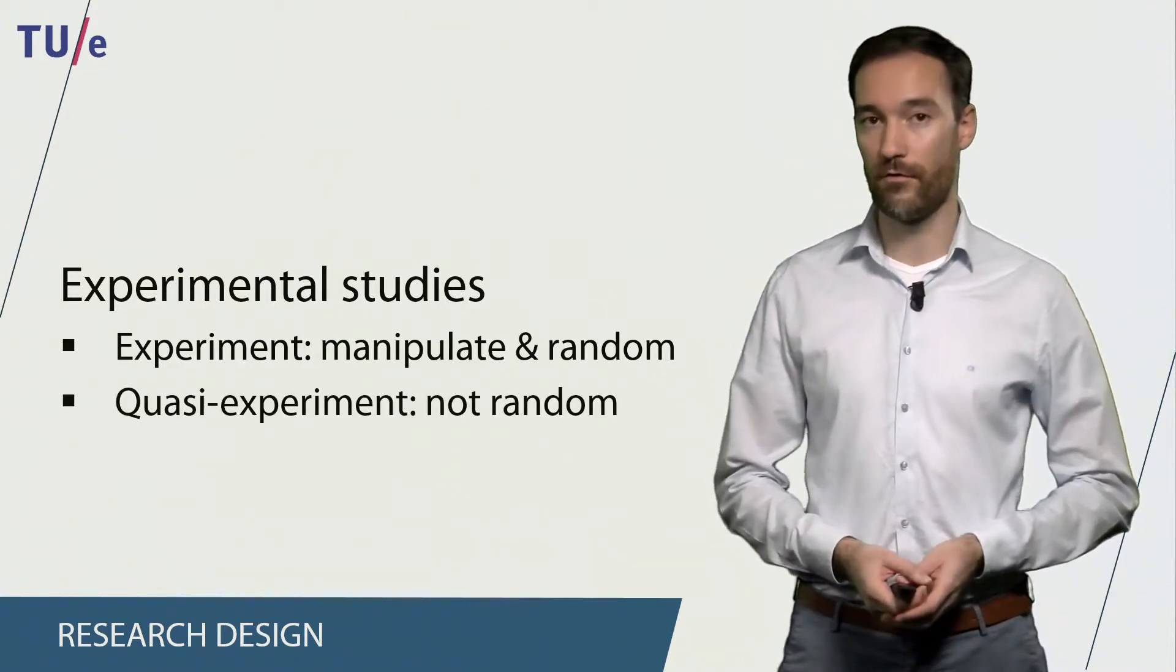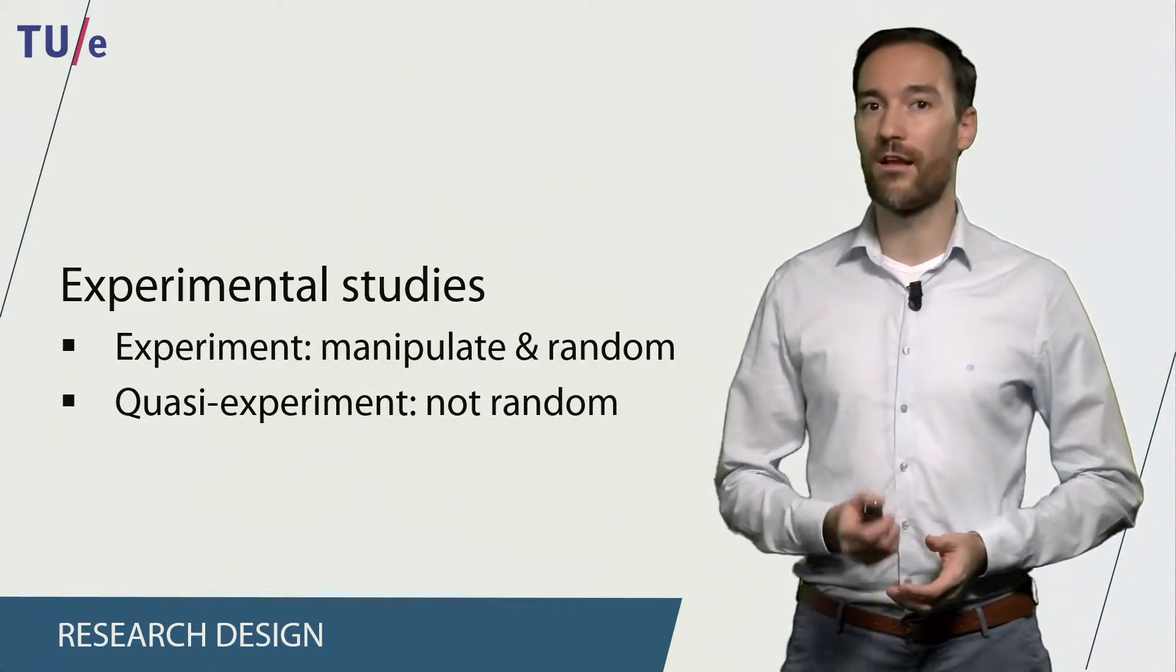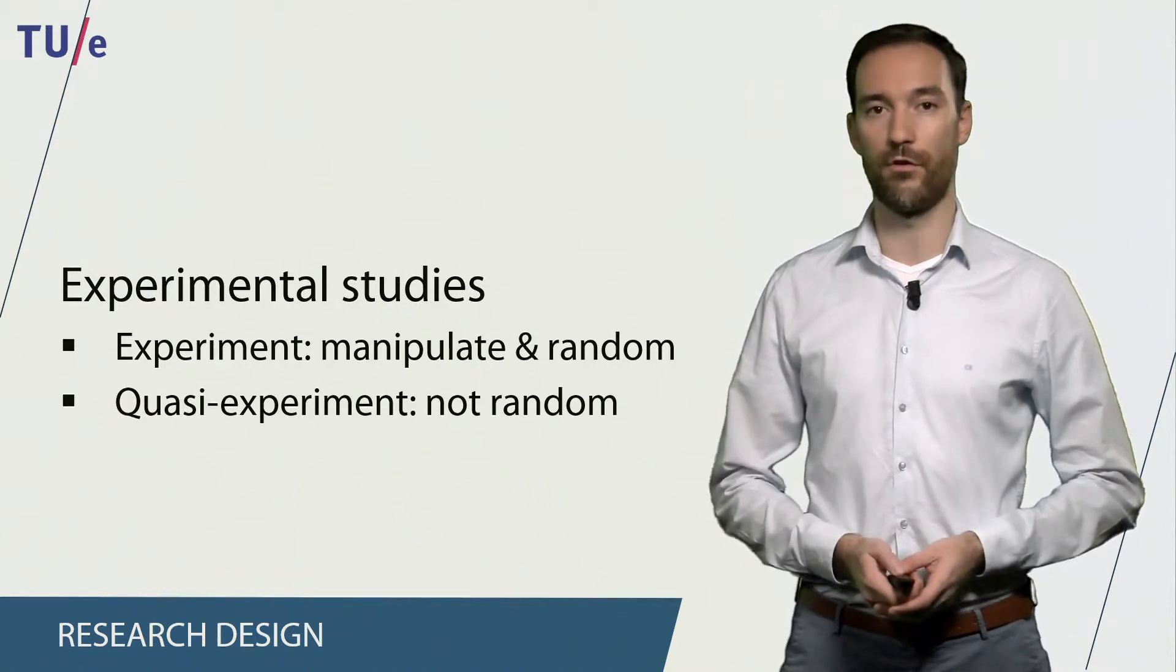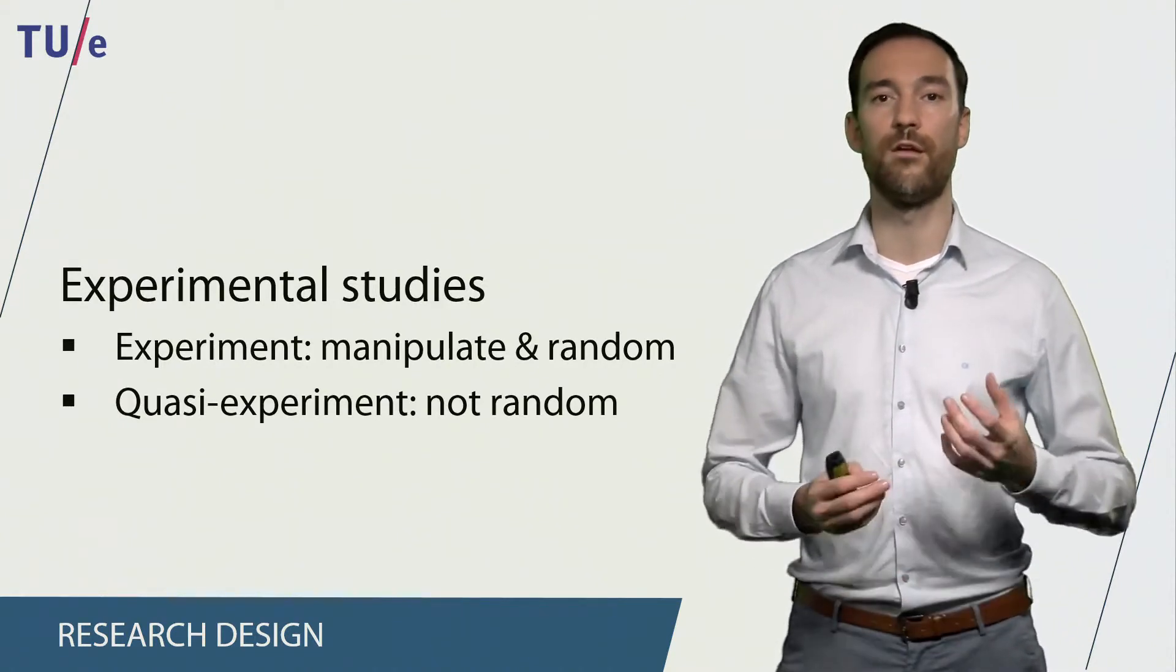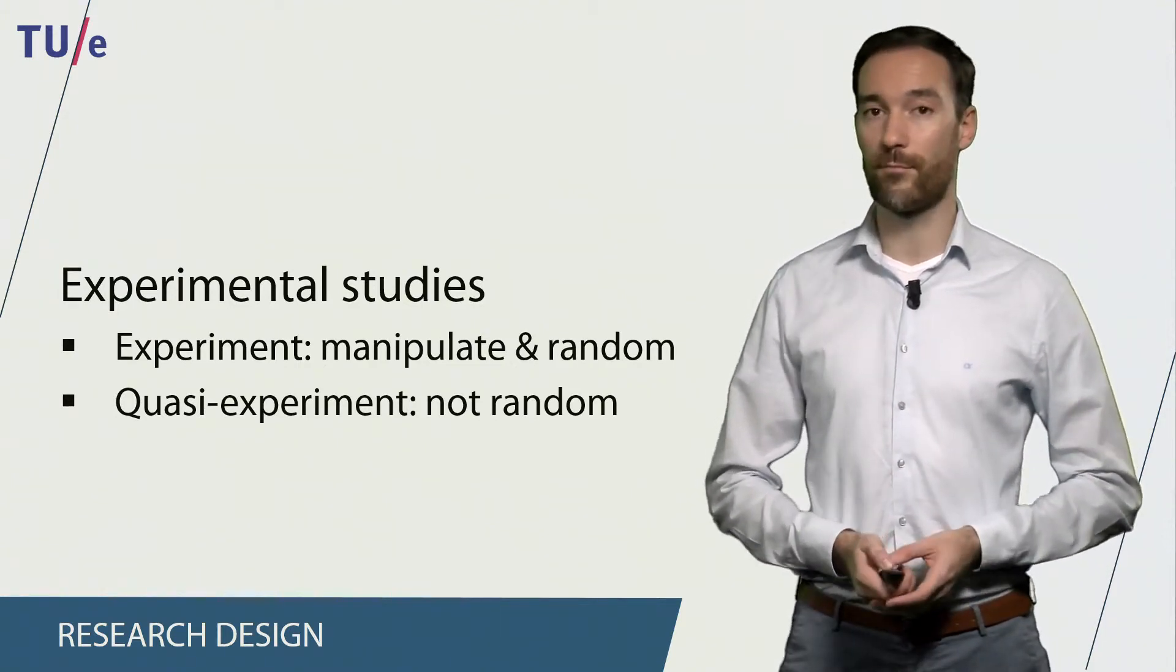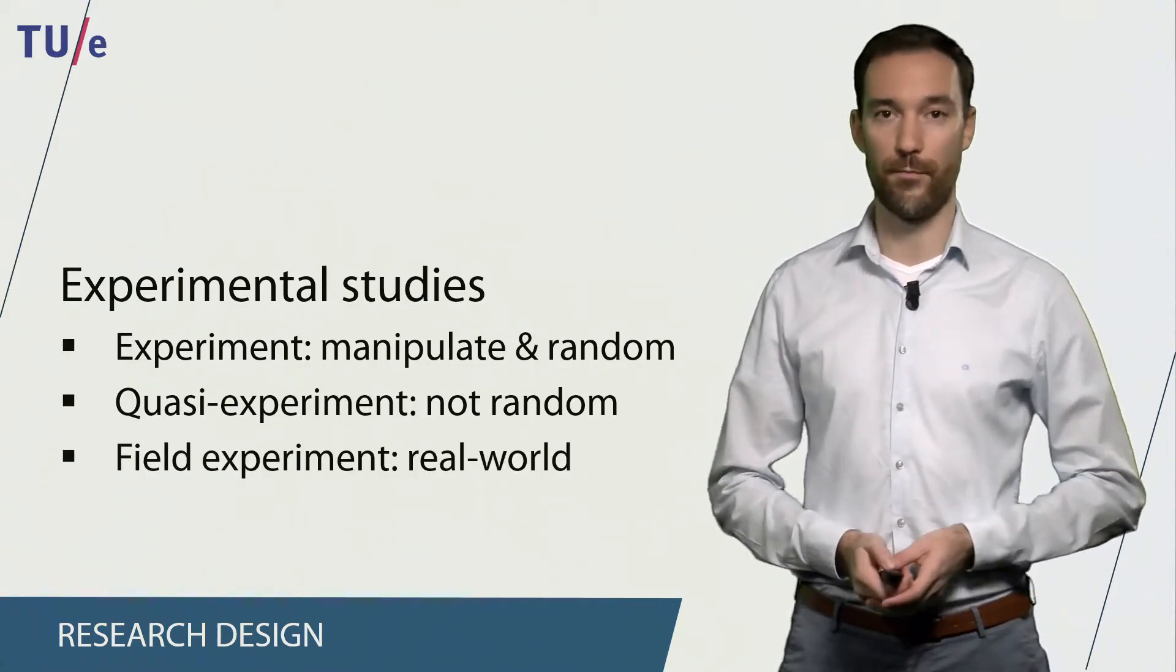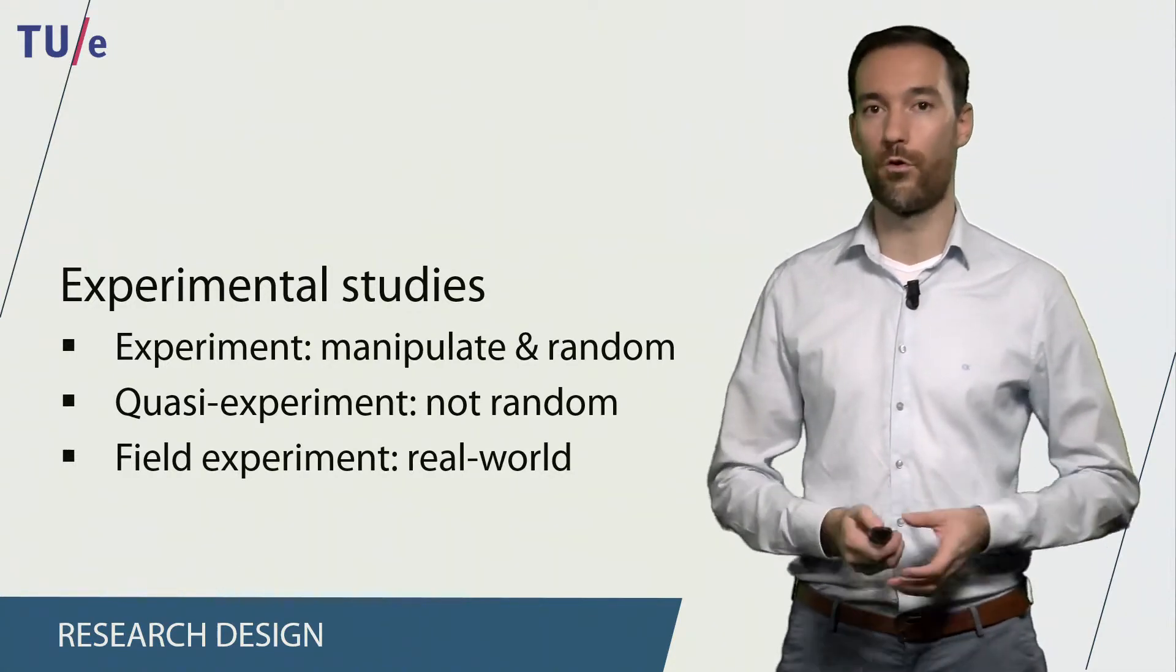In a quasi-experiment we also have a manipulation but participants cannot be randomly assigned to one of the conditions, for example when you investigate the differences in performance between students in different schools. A third example of an experimental study is a field experiment. In a field experiment we try to collect our data in a real world environment.